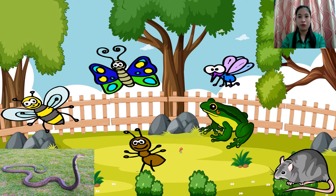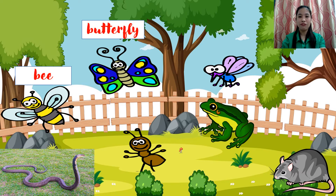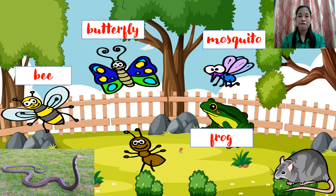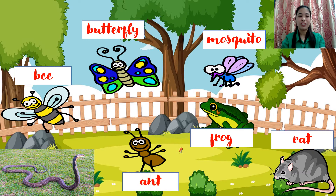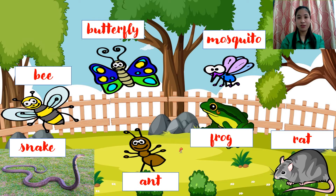How about this group of animals? Let's name them. We have bee, butterfly, mosquito, frog, rat, ant, and a snake. Have you seen those animals? Where can you find them? Right in our yard.